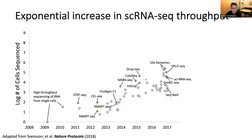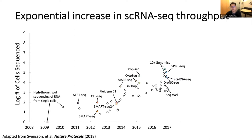On the x-axis is time and the y-axis is the log number of cells sequenced over time. This is adapted from the Svensson et al. Nature Protocols paper published in 2018, so it's a few years behind what's currently happening in single cell genomics. This is reminiscent of what happened when we were sequencing the human genome — we're experiencing exponential growth in the number of cells or data points being collected over time.